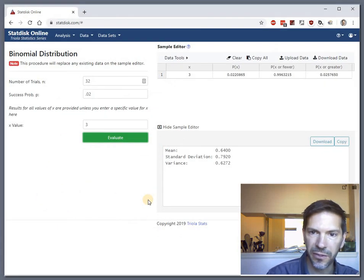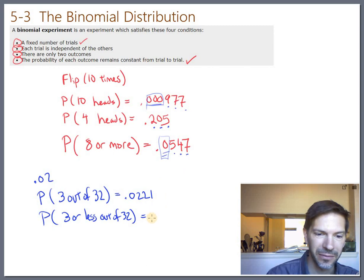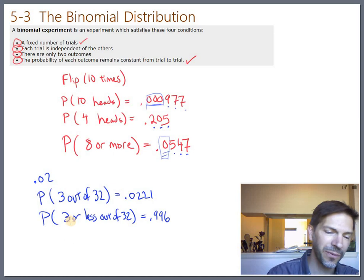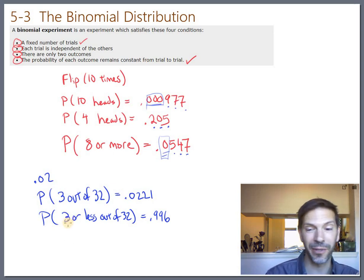And then three or less, so X or fewer, would be a 0.996. Pretty high probability. Which kind of makes sense because if only 2% of people are going to be twins, most of the time out of 32, 3 out of 32 is like 10% of the class. So that's already pretty high. So most of the time it'll be 3 or 2 or 1 or 0.